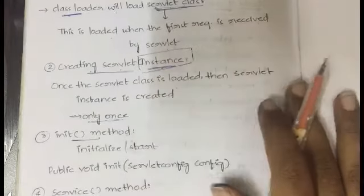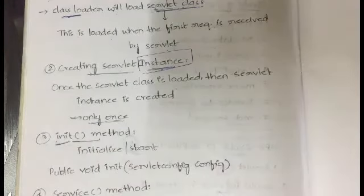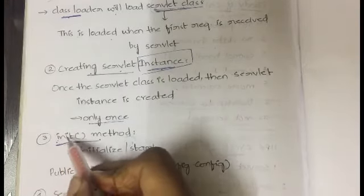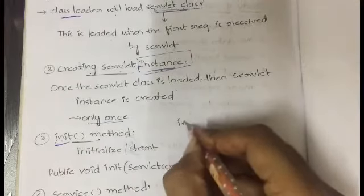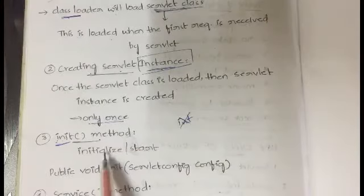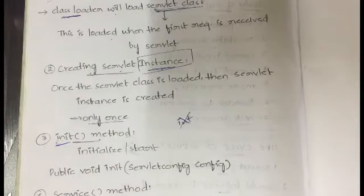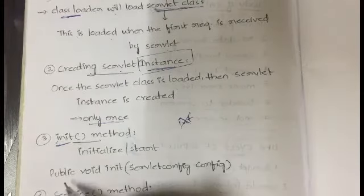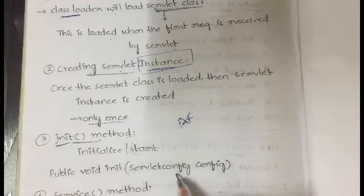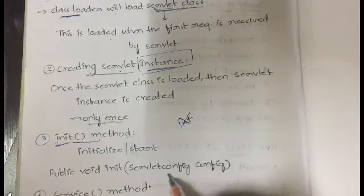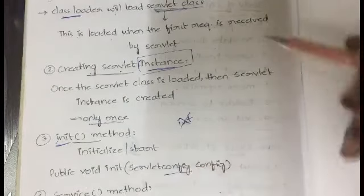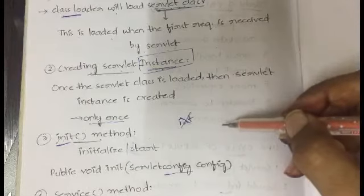The third step is the init method. Init is short for initialization. Don't confuse it with 'int' — it is 'init', i-n-i-t. The init method initializes and starts the servlet or starts the process of the servlet. The syntax is: public void init(ServletConfig config). As soon as the instance is created, the init method is invoked.